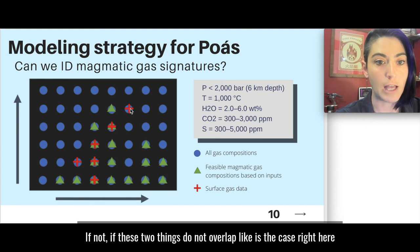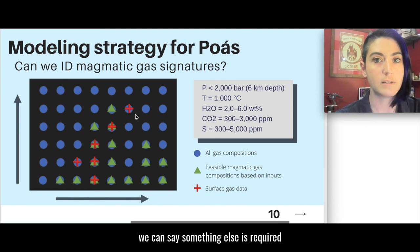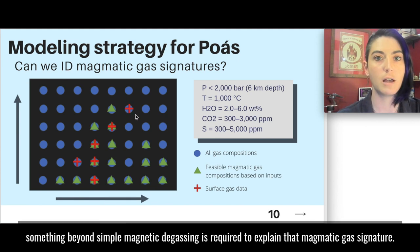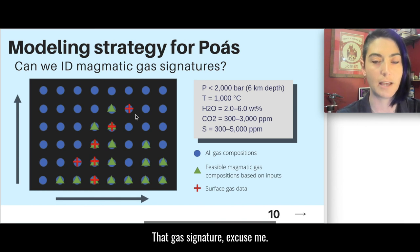And we can take our synthetic gas compositions and compare them to our natural measured ones. And where our synthetic gases can reproduce the natural ones, we can say okay that natural gas composition could have been produced by magma alone. If not, if these two things do not overlap, like it's the case right here, we can say something else is required. Something beyond simple magmatic degassing is required to explain that gas signature.